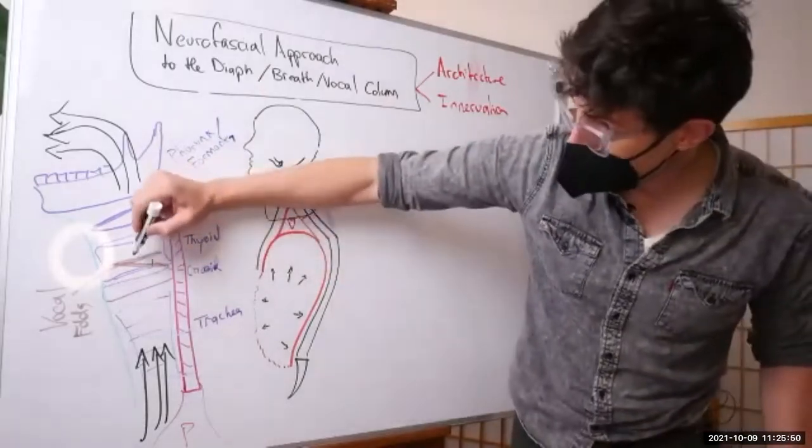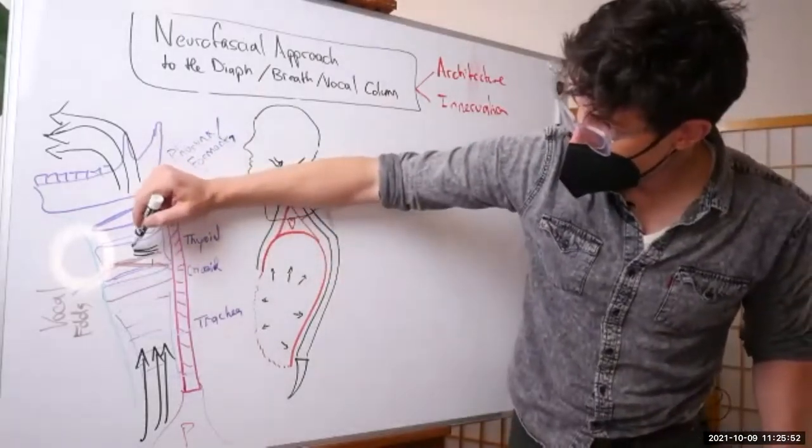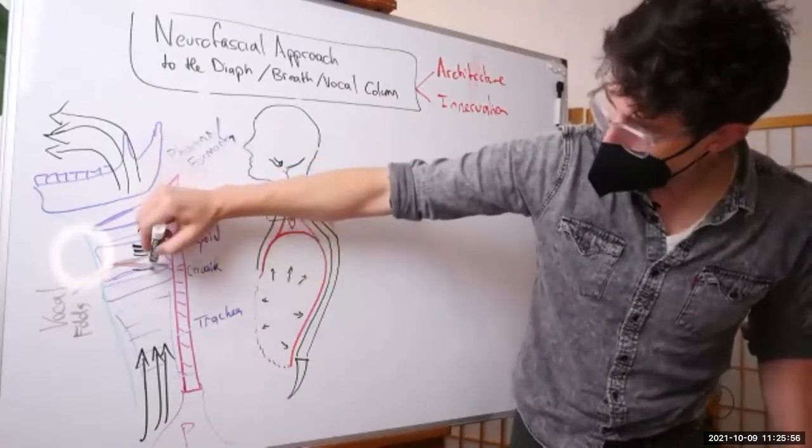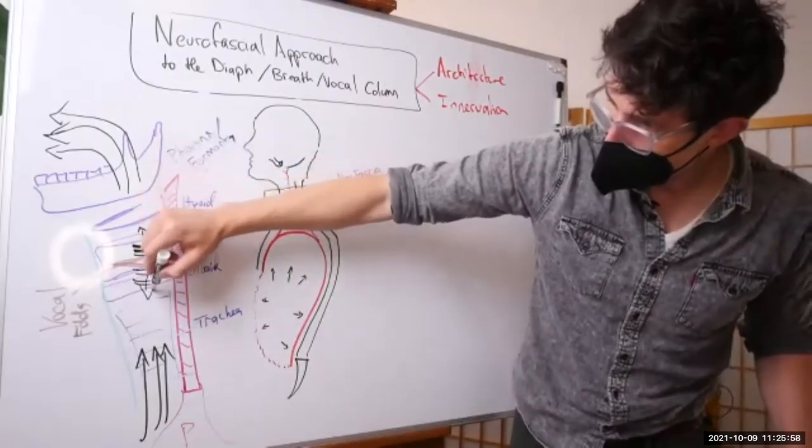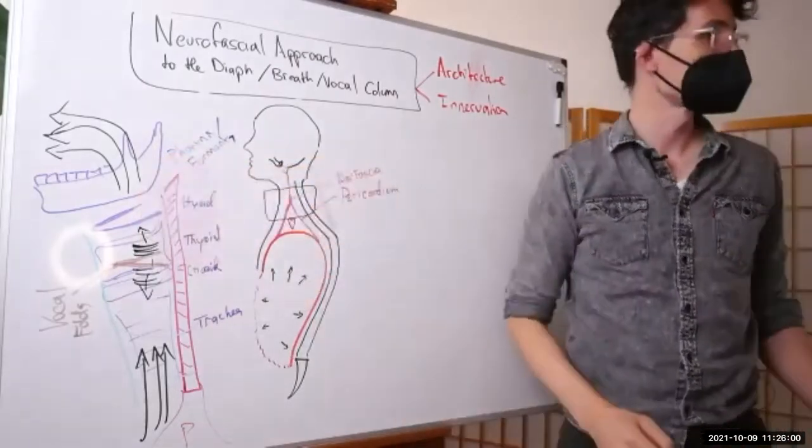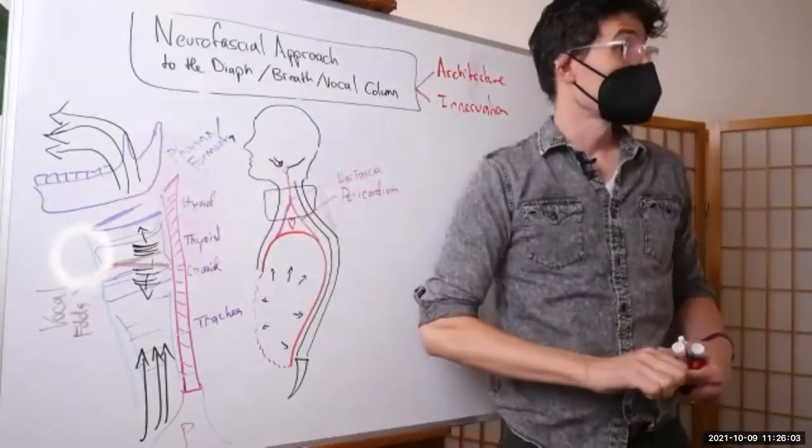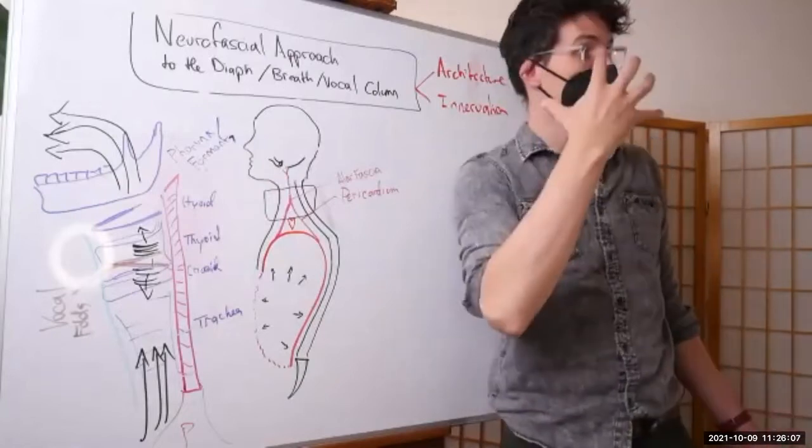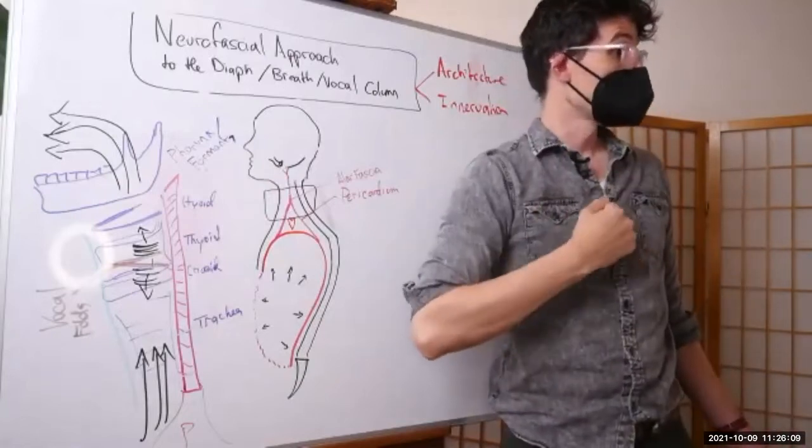There are vibrations that go upward through the mouth, but there are also vibrations that then go back down into the rest of the body. This is why resonance happens both up here but also down here.